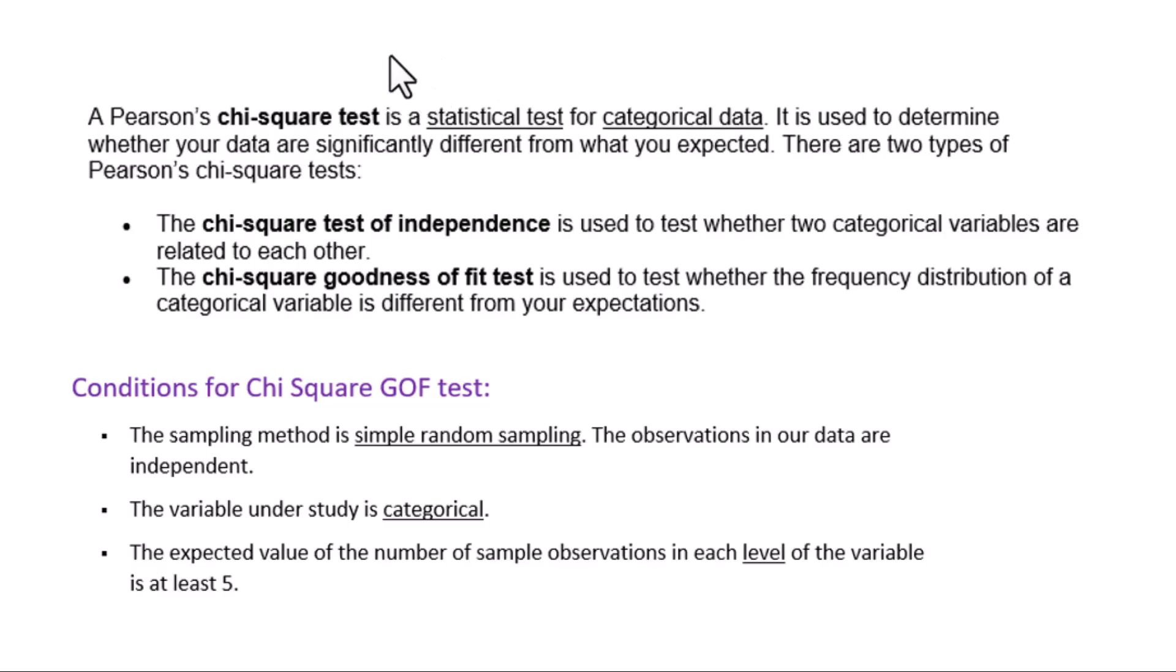This video is about chi-square GOF test. A Pearson's chi-square test is a statistical test for categorical data. It's used to determine whether your data are significantly different from what you expected.